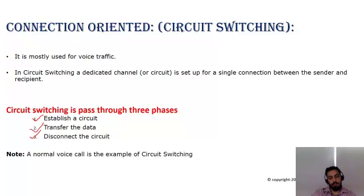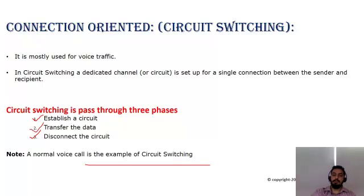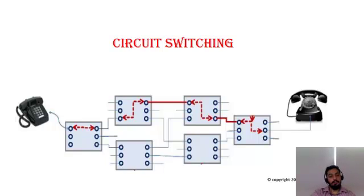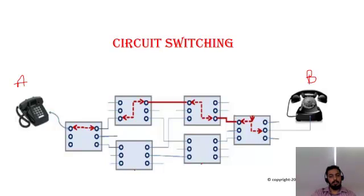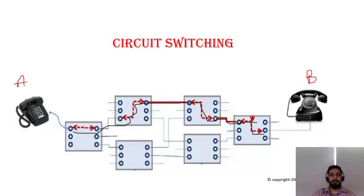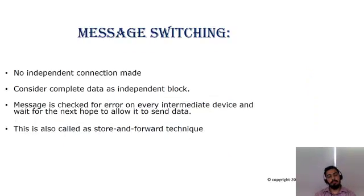A good example of circuit switching is a phone call. As shown in the diagram, we have Telephone A and Telephone B. Although there are different paths available, a specific dedicated channel — shown as the red lines — has been allocated to these two users so they can transfer their data and communicate with each other.